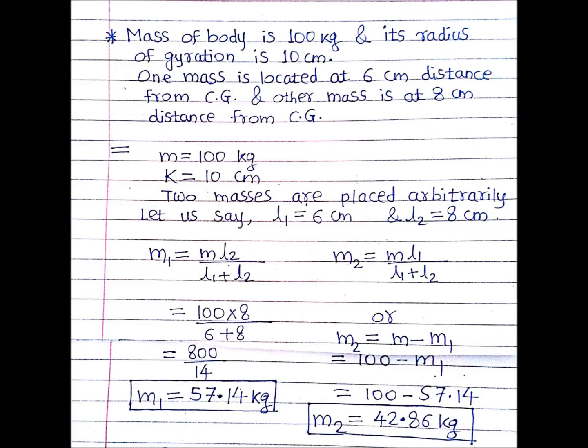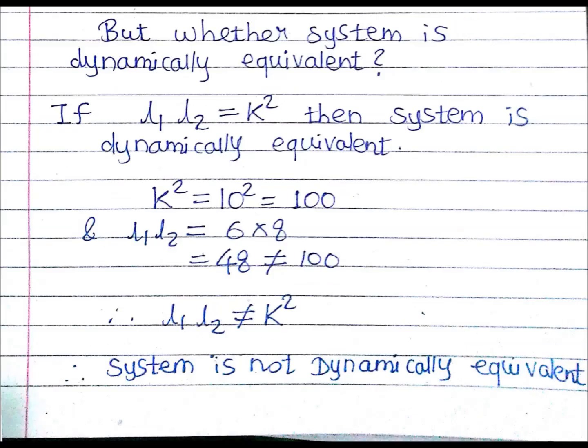Although we know M1, M2, L1, and L2, we need to verify whether this system is dynamically equivalent to the original body (100 kg, K=10 cm). Using the condition L1·L2 equals K²: here L1·L2 equals 6×8 equals 48, but K² equals 100. Since 48 does not equal 100, this two-mass system is not a dynamically equivalent system.